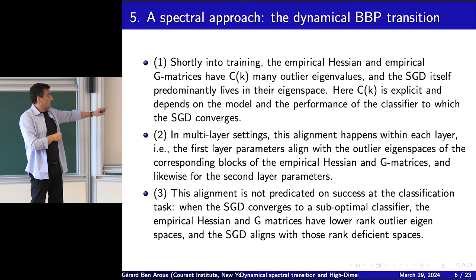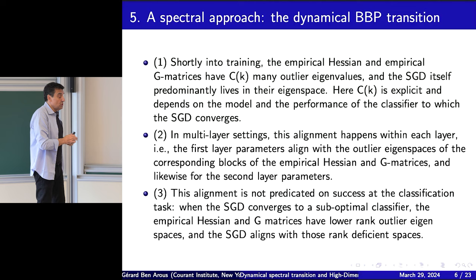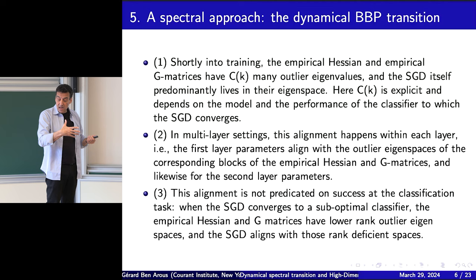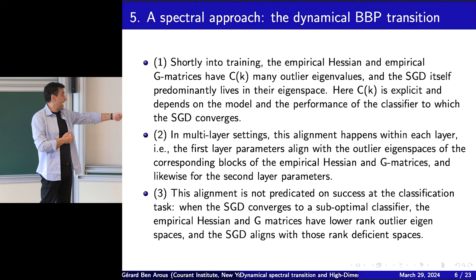Importantly, this alignment is not predicated on success at the classification task. It could be that — remember the XOR model — SGD could go to bad classifiers. If the SGD is converging to a suboptimal classifier, you may have outliers, and they may be bad. So you have to be careful.